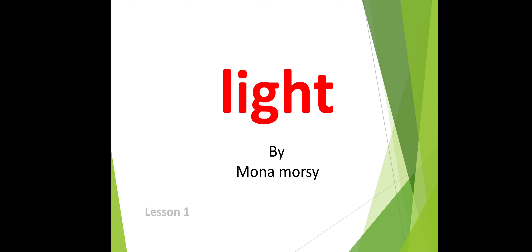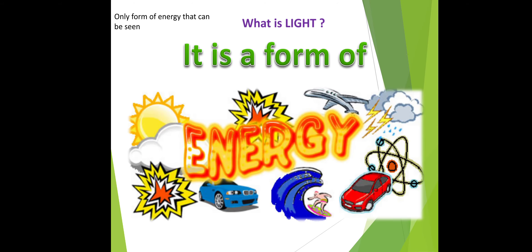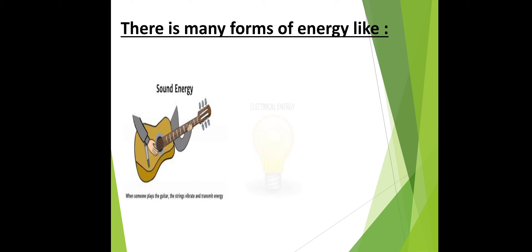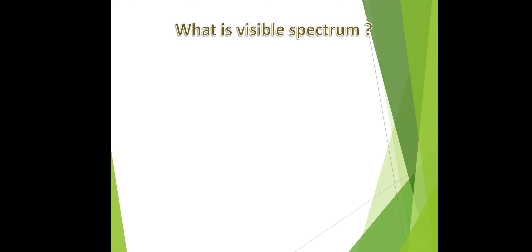Hello Grade 5, let's start Lesson 1, Unit 1: Light. Do you know light? Light is a form of energy — specifically, a form of energy that can be seen. We took examples of other energies like sound energy, electric energy, and magnetic energy.